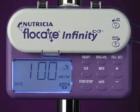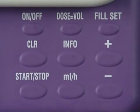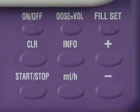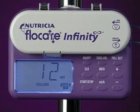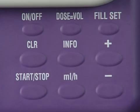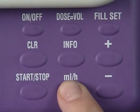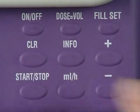The info key can be pressed during operation. It will display the total volume delivered since the memory was last cleared. This information remains in the display until the milliliters per hour or dose equals volume keys are pressed.